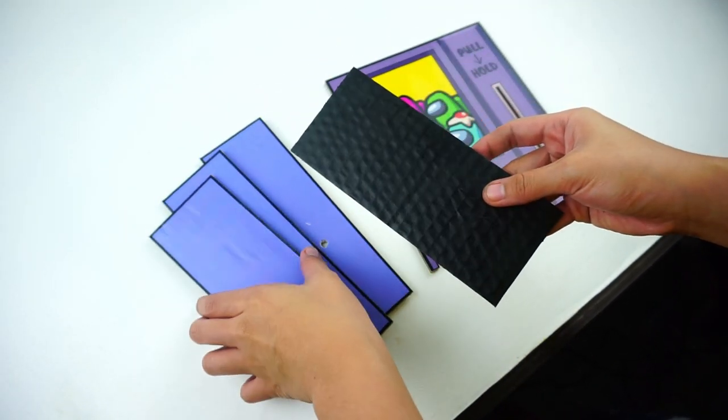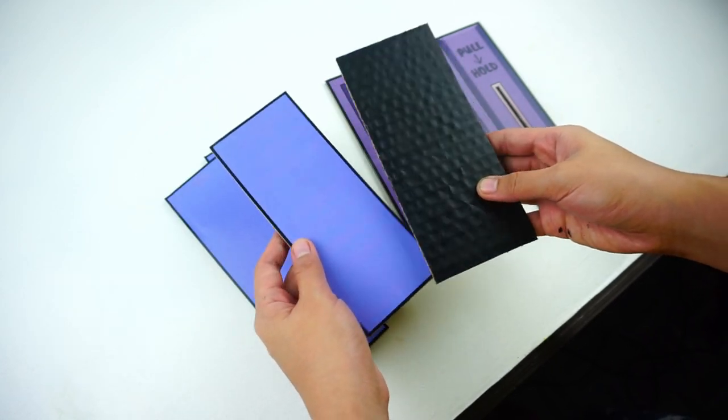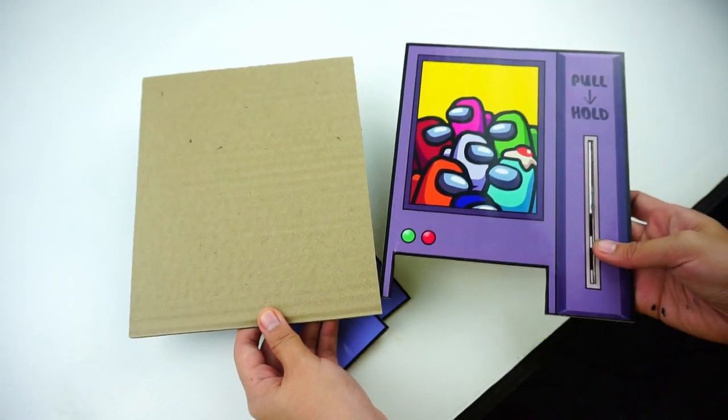I also made the bottom part of the machine which is just the same size as this piece, and the back part which has the same measurement as the front piece.